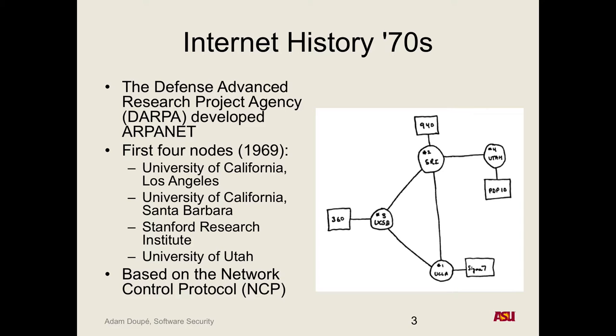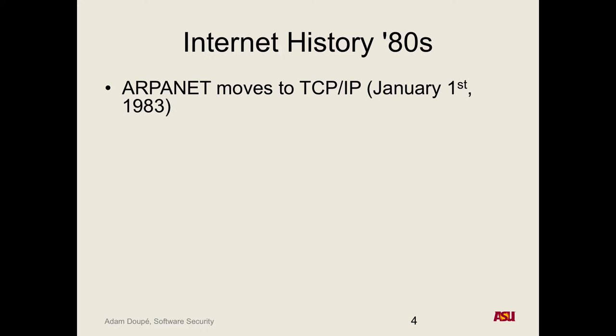In the 70s, ARPANET was purely a research thing — researchers proving that computers and machines could talk to each other over networks. In the 80s, in 1983, they had what's called a flag day: everyone using the internet decided NCP wasn't very good and they'd move to TCP/IP. They all shut down their computers, installed updates to upgrade operating systems to use TCP, and then brought everything back up.